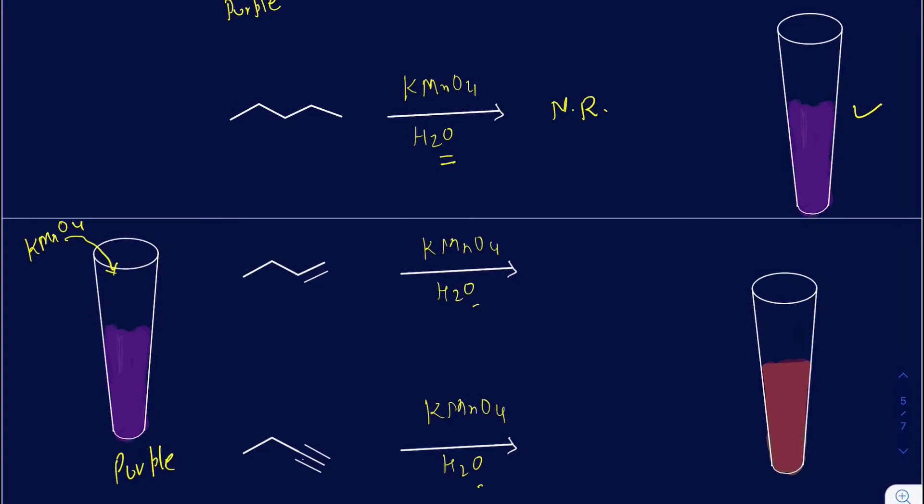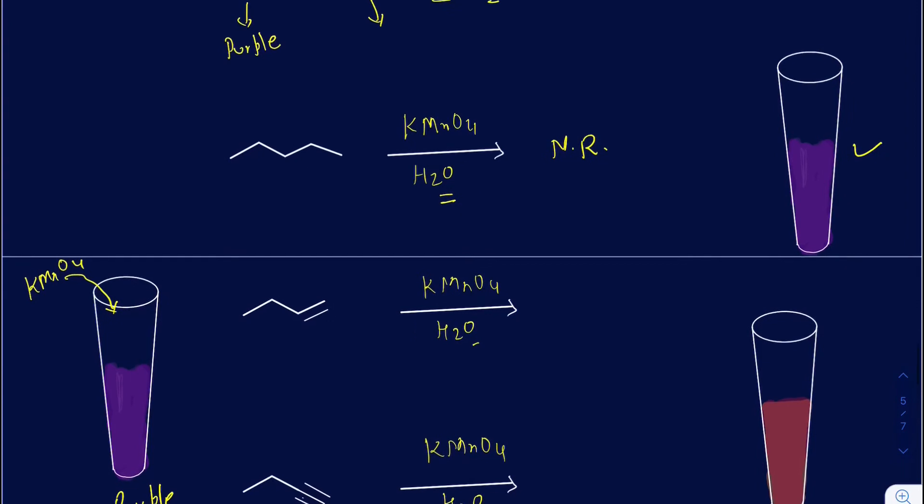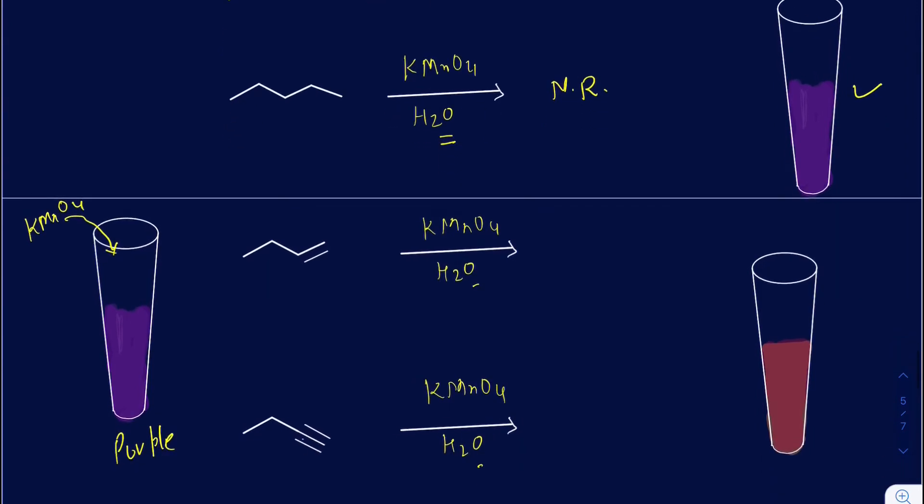However, when this KMnO4 reacts with the alkene and the alkyne, it makes MnO2, manganese dioxide, and that's going to be reddish-brown in color. That confirms that this is going to be a positive Baeyer test.